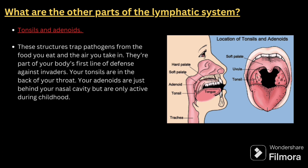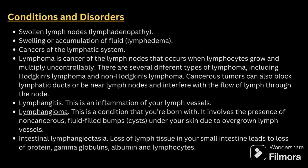Moving to conditions and disorders: the first is swollen lymph nodes, called lymphadenopathy. The second is swelling or accumulation of fluid, called lymphedema. Third is cancers of the lymphatic system. Fourth is lymphoma, which is a cancer of the lymph nodes that occurs when lymphocytes grow and multiply uncontrollably. Types include Hodgkin's lymphoma and non-Hodgkin's lymphoma. Cancerous tumors can also block the lymphatic duct or nearby lymph nodes and interfere with the flow of lymph.